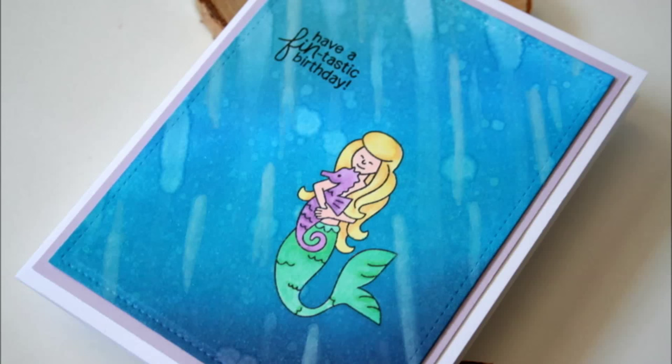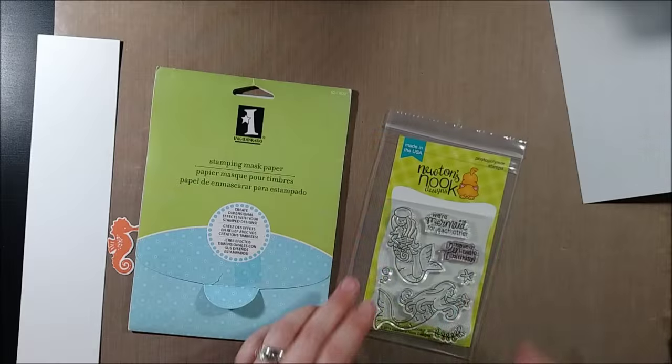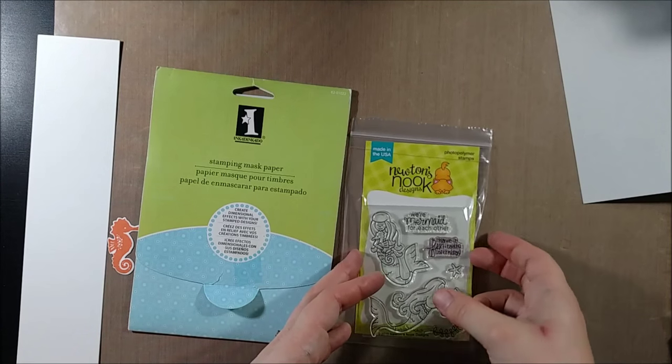Hello crafty friends, it's Jess from JessCrafts.com and today I'm here with the Newton's Nook Designs August release. The first stamp set of the release is one of the smaller 3x4 stamp sets and it's called Mermaid Crossing.